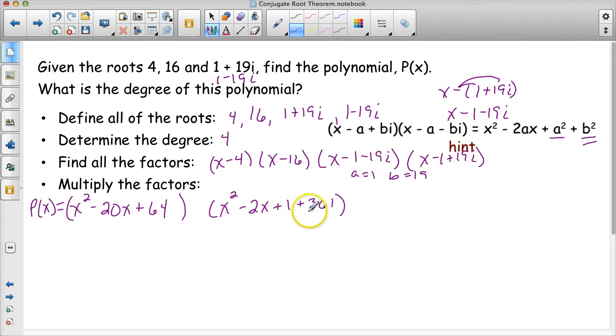But I also notice that 1 plus 361, that's 362, so I'm going to simplify this. And if you were doing this on paper, I'd suggest rewriting it, not erasing it, that way you can see exactly where that 362 came from. Of course, now what does this mean? This means that we're going to have to multiply again. We've got two trinomials that need to be multiplied together in order to get the polynomial in standard form.